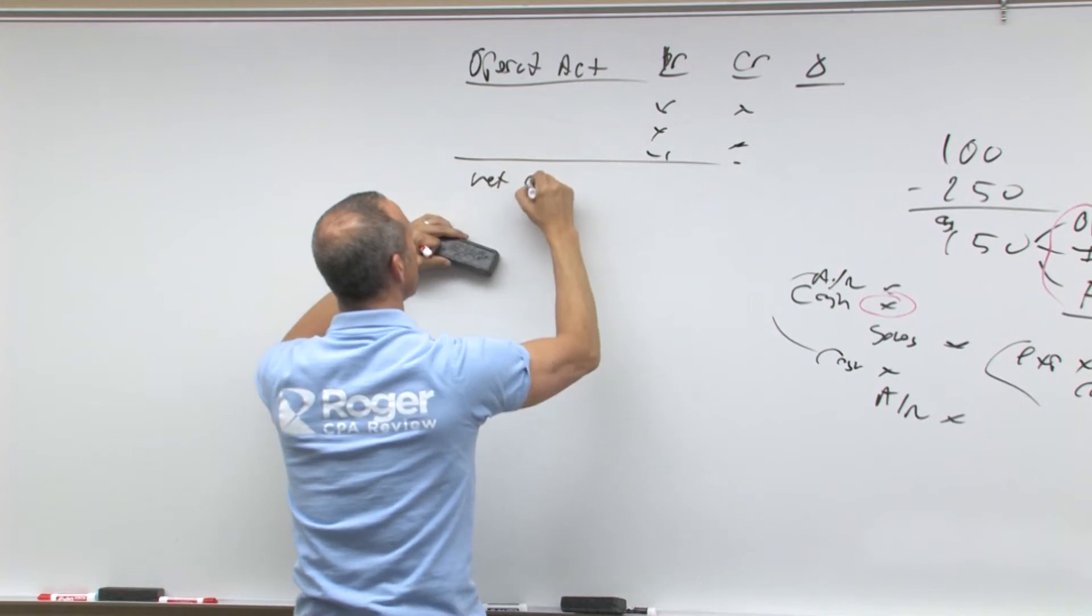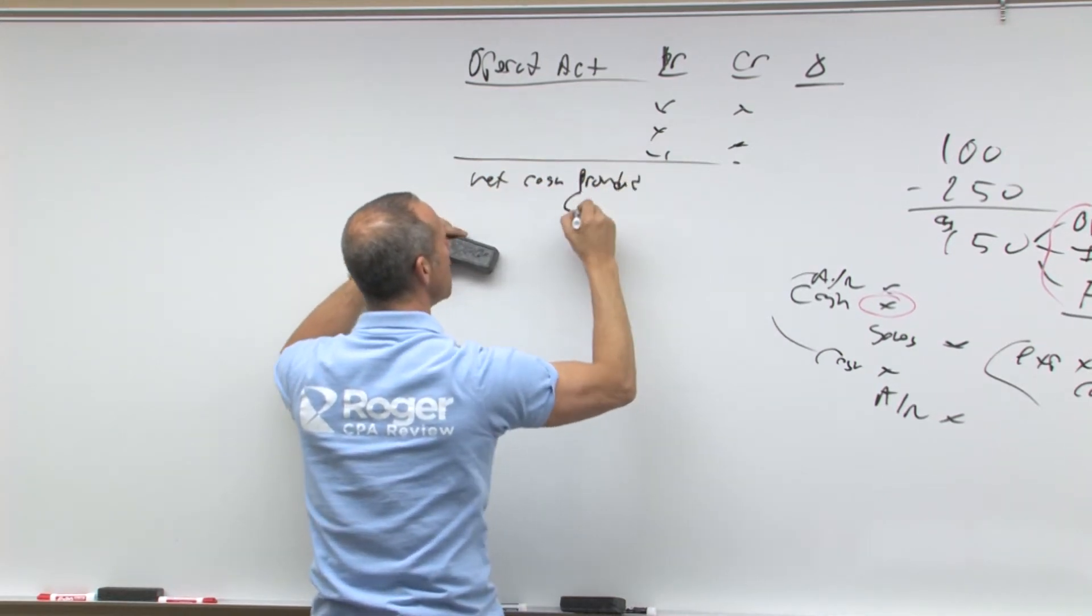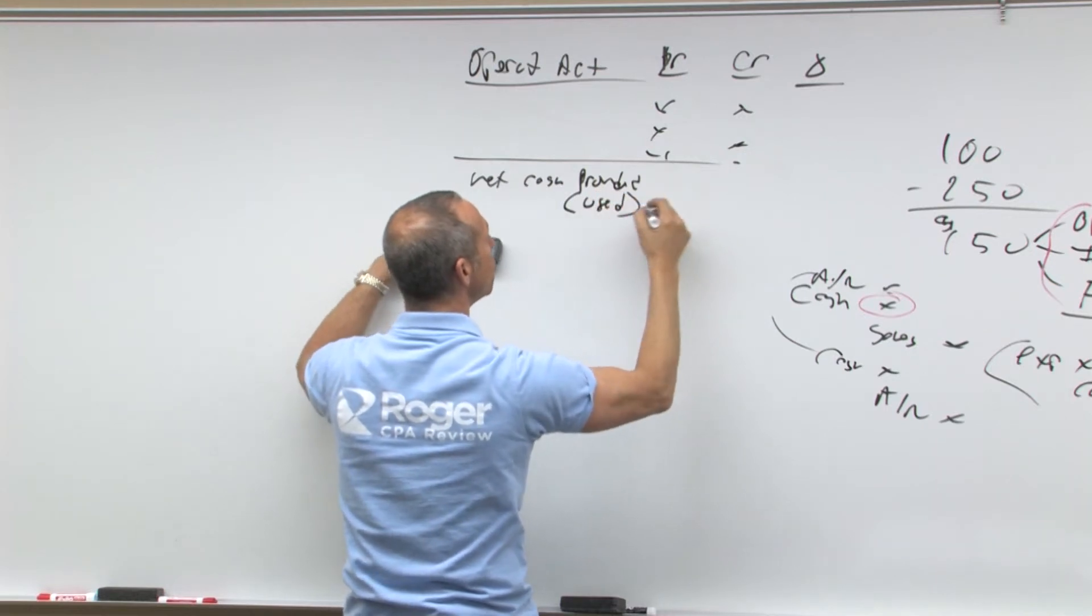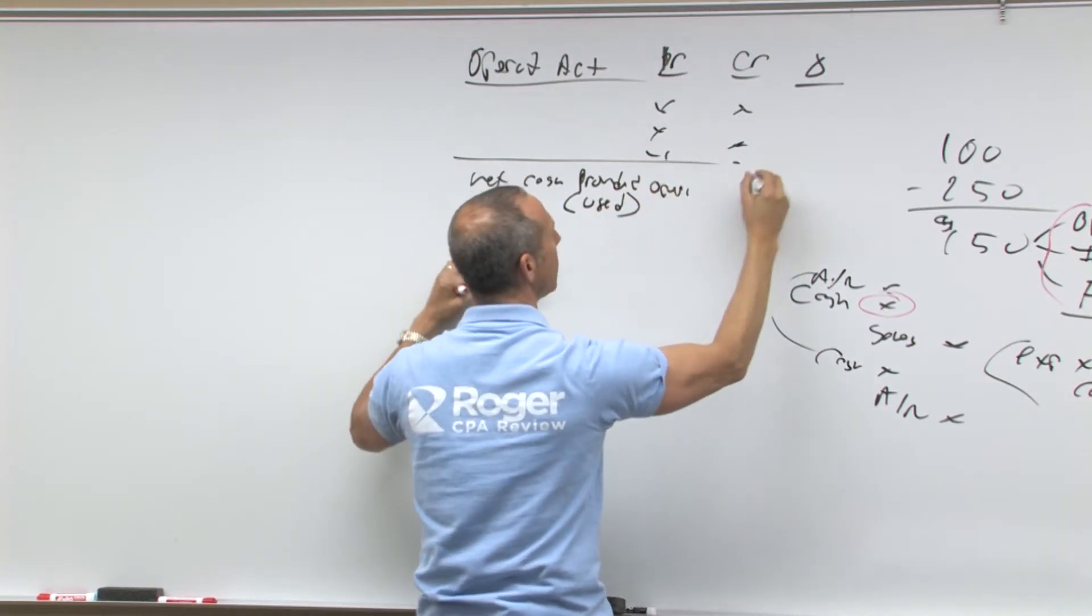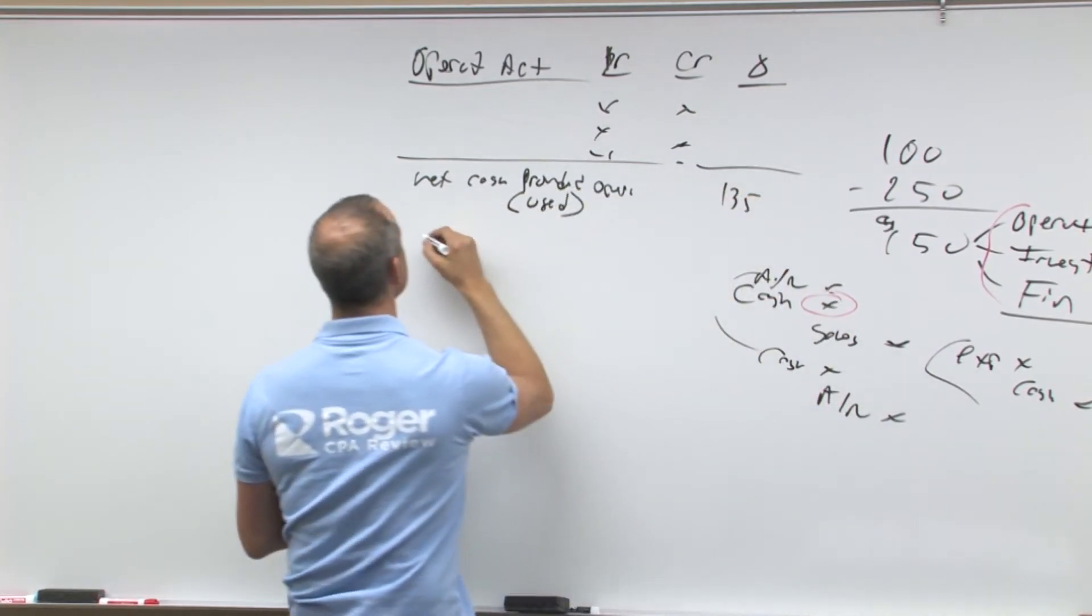So we'll have all these debits and credits and debits and credits and debits. And then the net would be the net cash. And if it's positive, it's provided. If it's negative, it's called used by operating activities. And that would be the amount over here. Let's say I got 135.